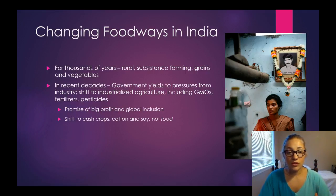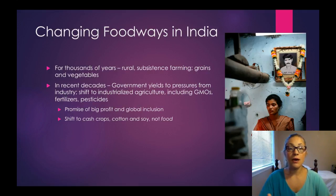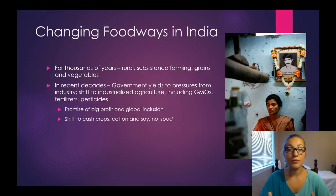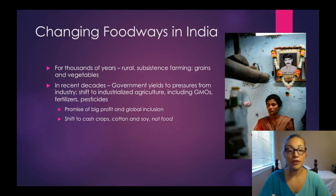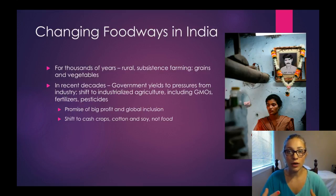So why would they do this? It promises more profit and inclusion on the global market. If you're only creating food for your family, you're not included in global trade. If the government can get individuals to shift away from subsistence farming toward industrial agriculture, they can become involved in the larger global market and increase their standing on the global level.